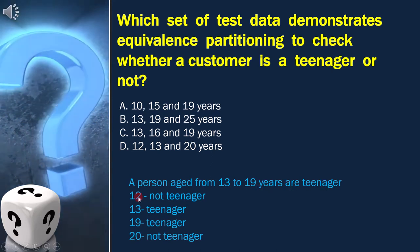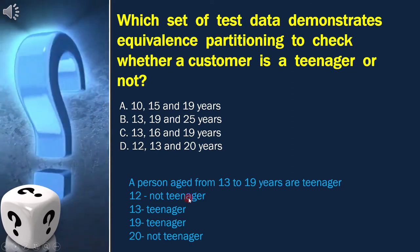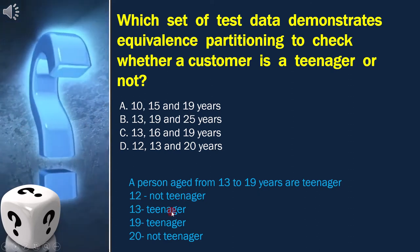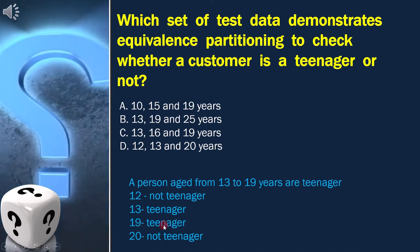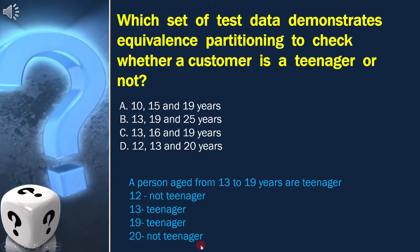Which means 12 is not a teenager, 13 is a teenager, 19 is a teenager, and 20 is not a teenager.